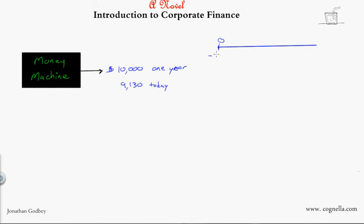My question is why would you do that? Your first answer may be because you make a profit of $870, right? You say well $10,000 less $9,130 is $870. I made an $870 profit.